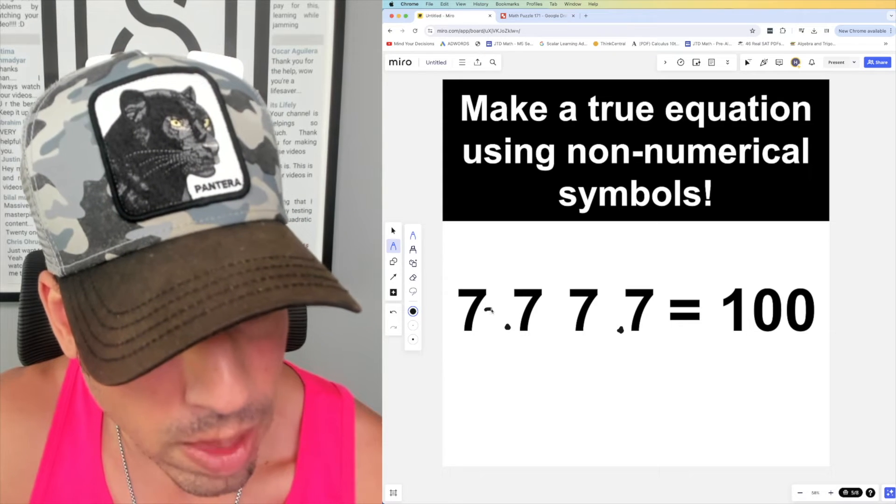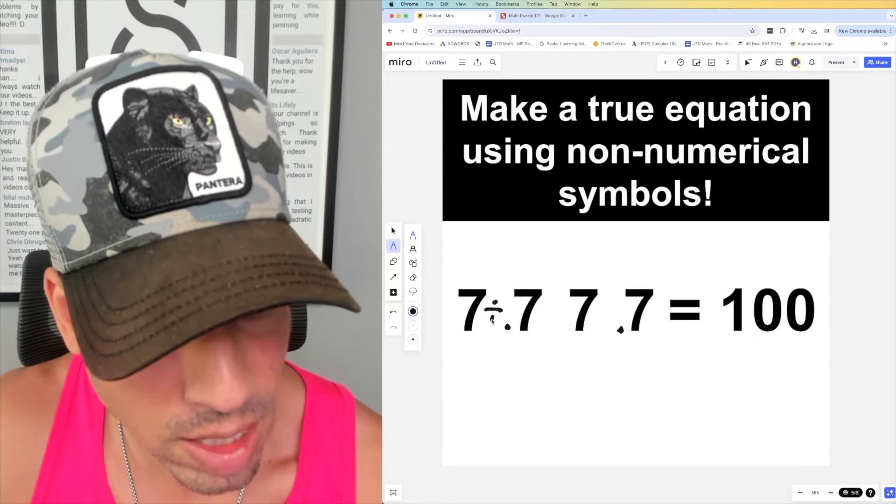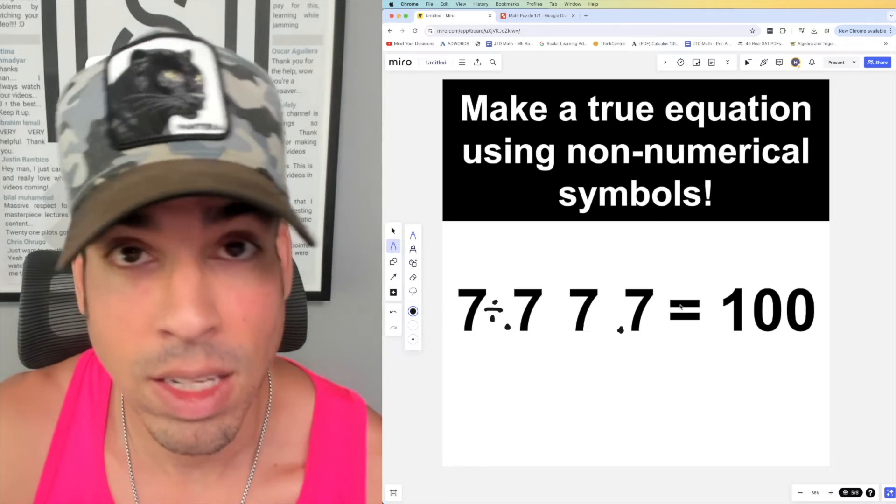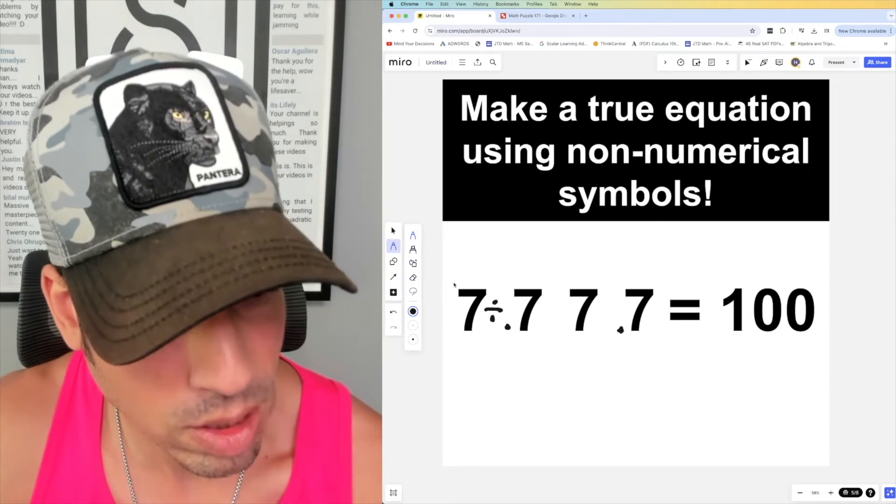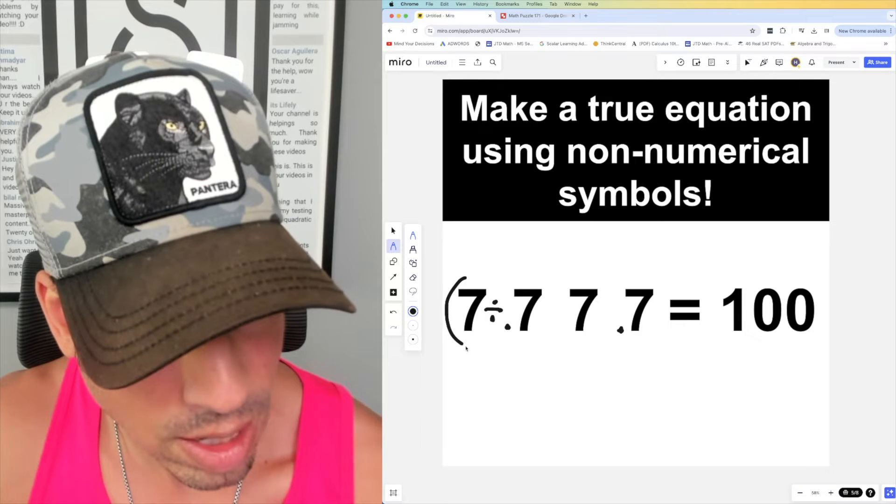...throw in a division. Check this out: what's 7 divided by 0.7? That's going to give me 10, right? 7 divided by 7 is 1, but 7 divided by 0.7 is going to give me 10. And that's really cool.